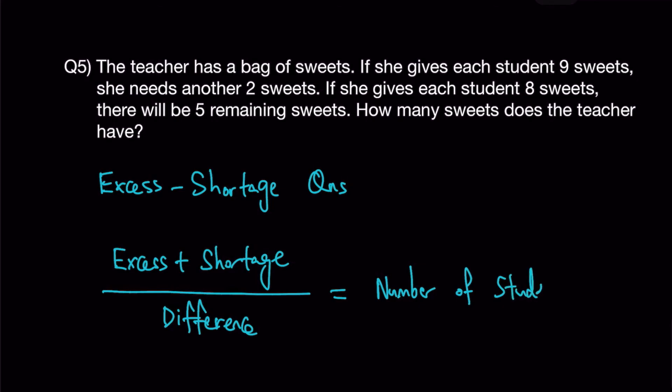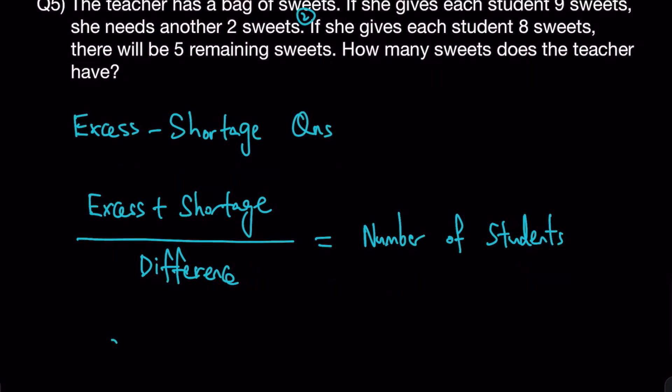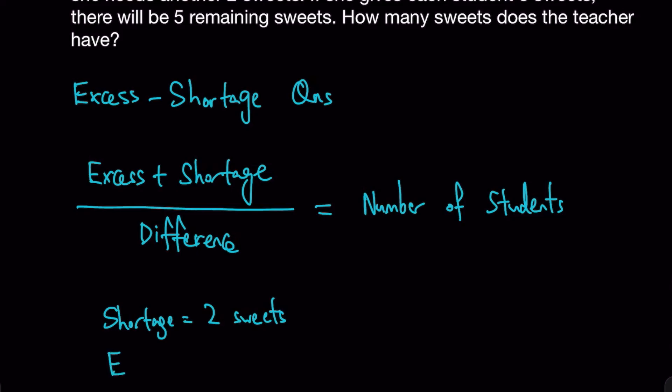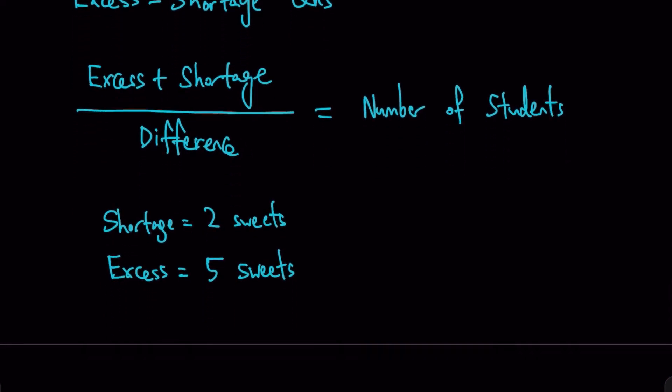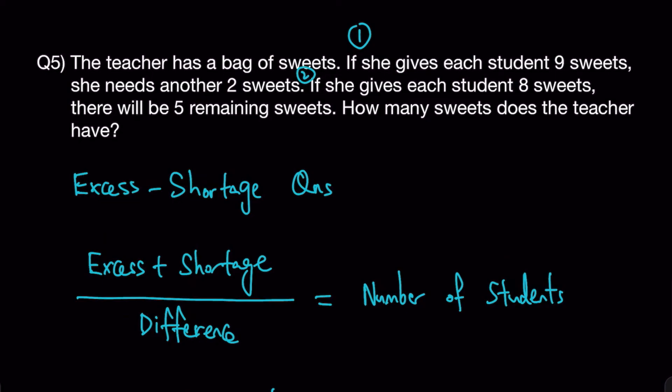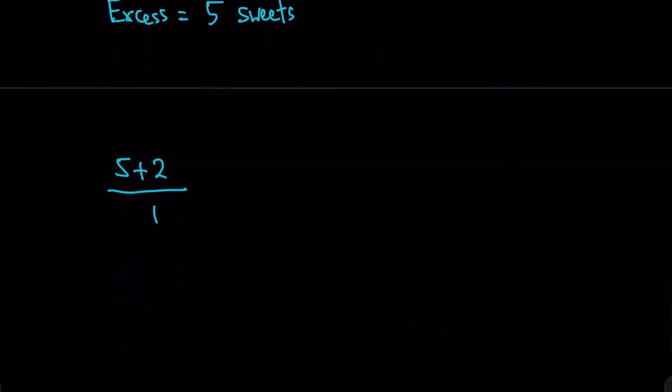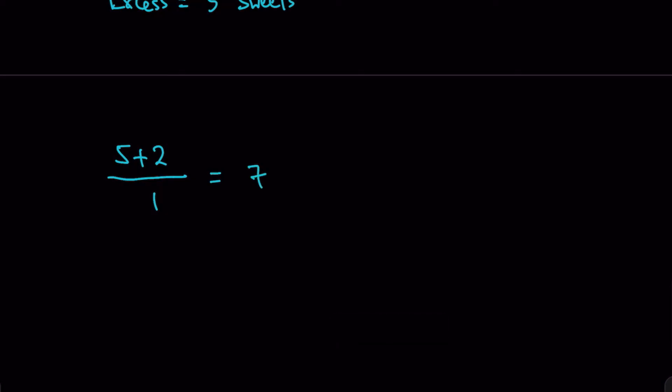For both cases, you have case 1 and case 2. If we look at case 1, you'll realize that there will be a shortage of 2 sweets. And if we look at case 2, there will be an excess of 5 sweets. Following the formula, what we can do is 5 plus 2 divided by the difference. And you notice that the difference in the cases, one case is giving each student 9 sweets and the other case is giving each student 8 sweets. The difference is 1. So 5 plus 2 divided by 1 would give me 7 students.